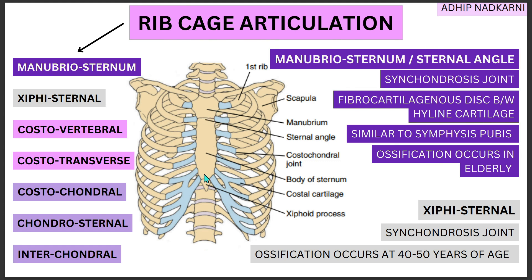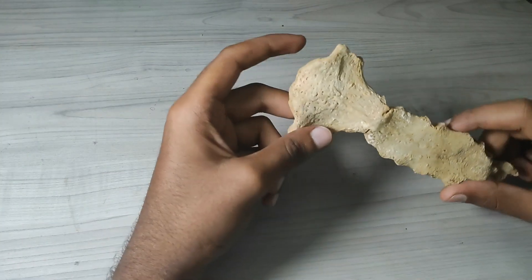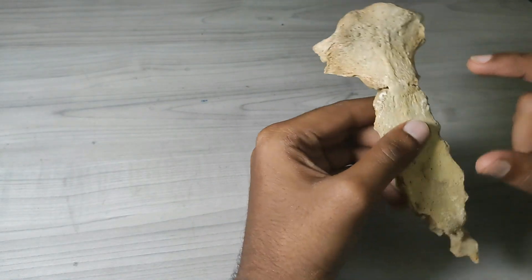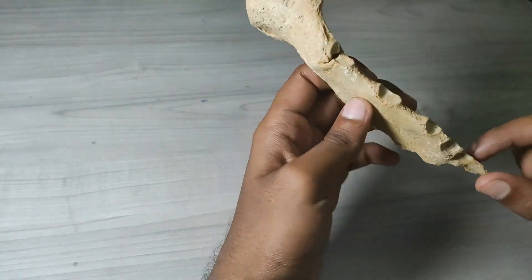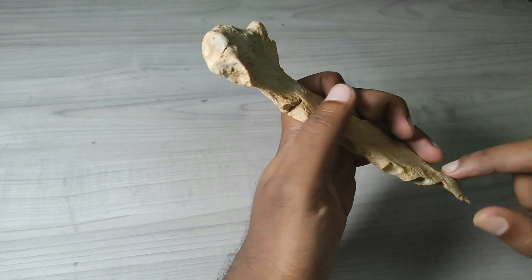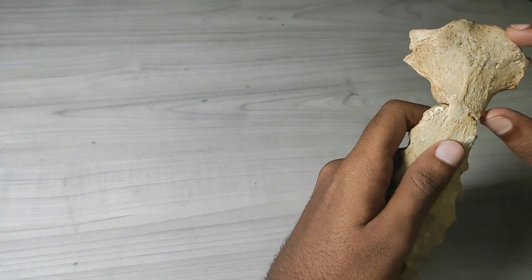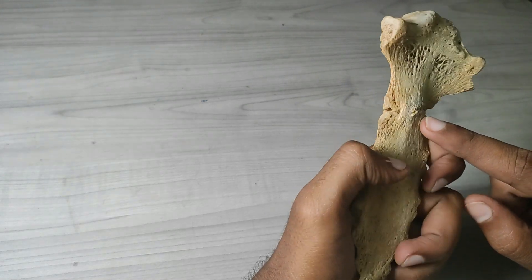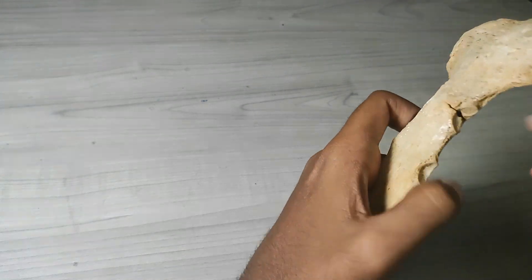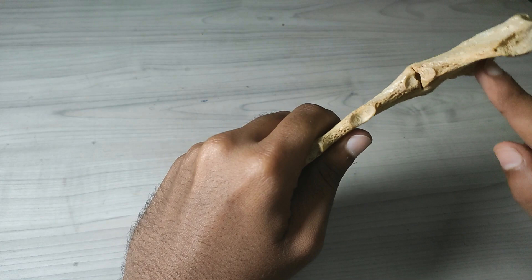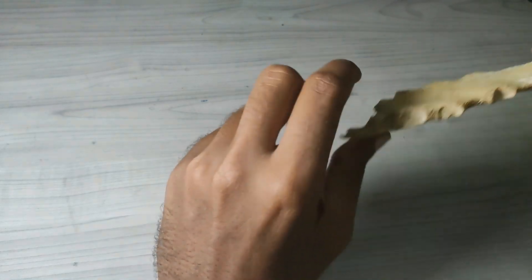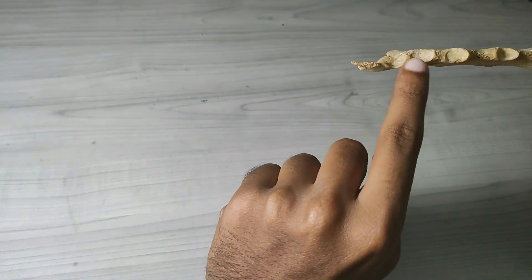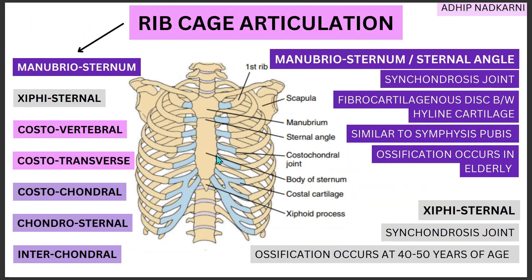Now let's have a look at these joints on a real bone set. Here is the manubrium, the sternal body, and the xiphoid process. Where the manubrium and sternal body meet is the sternal angle — the manubriosternal joint — and here is the xiphisternal joint.